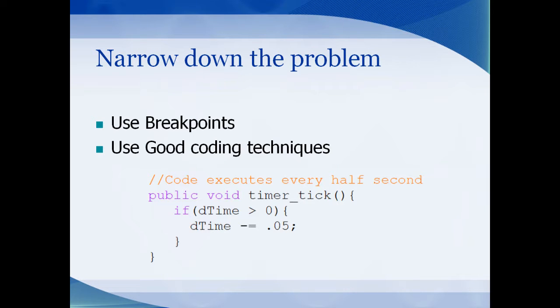Using good coding techniques is another way you can narrow down where your problems are in your code. If your code is easier to read, then it's easier to debug. You want to line up any closing braces with the line of code that opens them, and then anything inside the braces you want to indent so you can easily see what lines are contained within the if block or whatever block you're using. Another way you can narrow down the problem is to use a breakpoint.